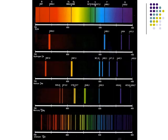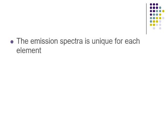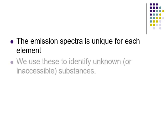When you heat an element and pass the light through a prism, you get an atomic emission spectrum. Unlike white light's full rainbow, you get specific lines of color — each line corresponds to an electron jumping to a higher energy level and falling back down by a specific amount of energy. The emission spectrum is unique for each element, acting like a fingerprint. This is how we know what far-away stars are made from — we analyze the light coming from them.